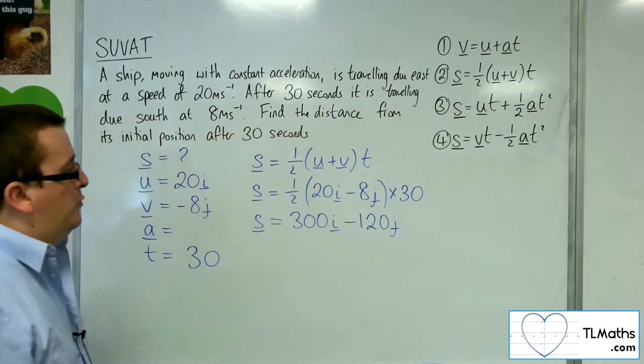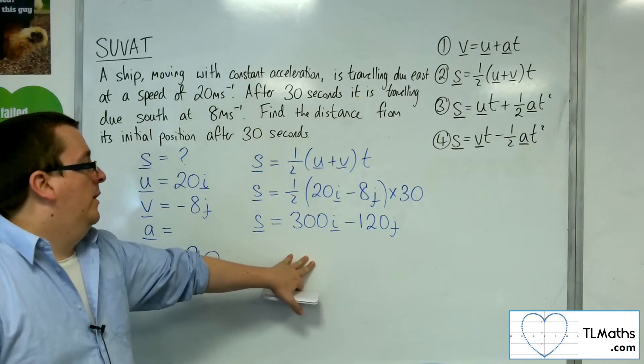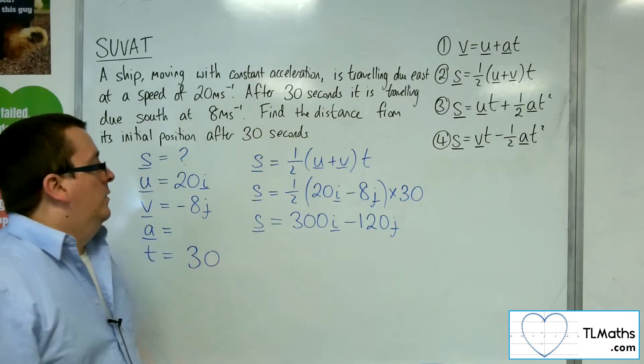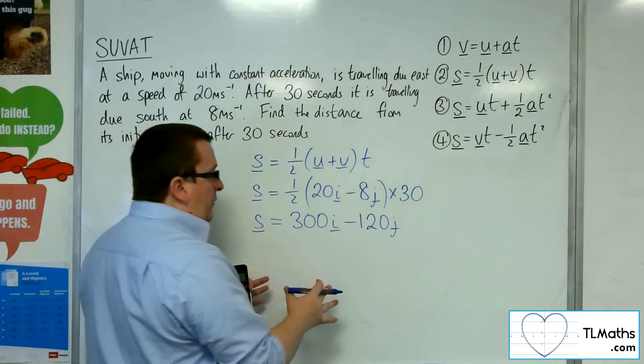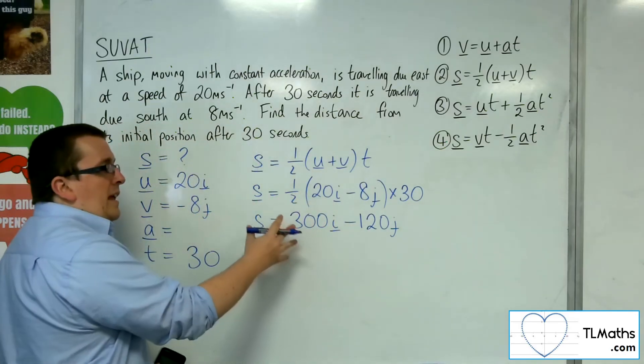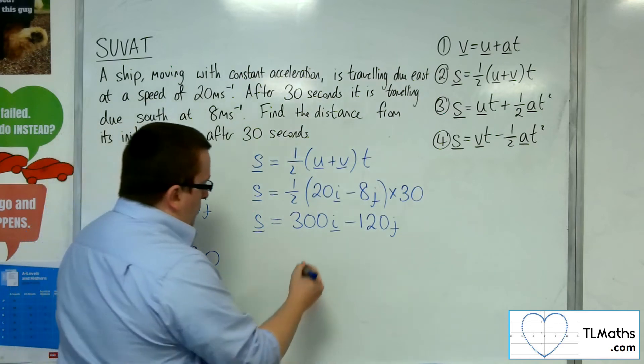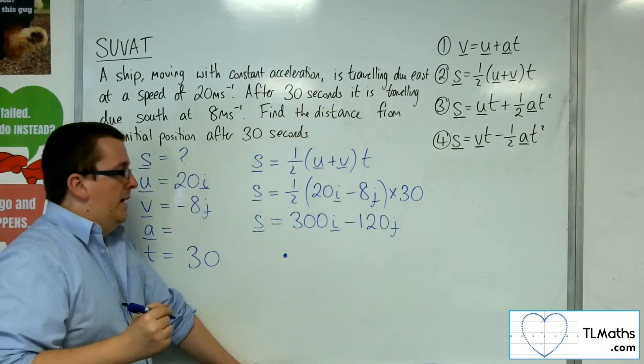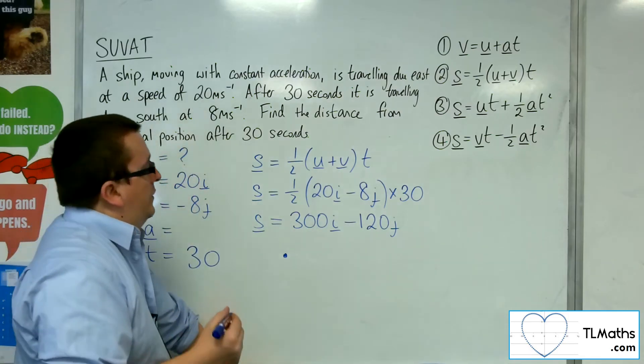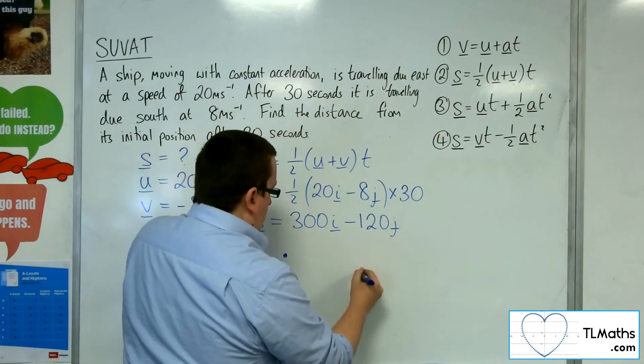This represents the displacement of the ship. We want the distance, which is the magnitude of this vector. Here is the ship at its initial position, and after 30 seconds, it is 300 along and 120 down.